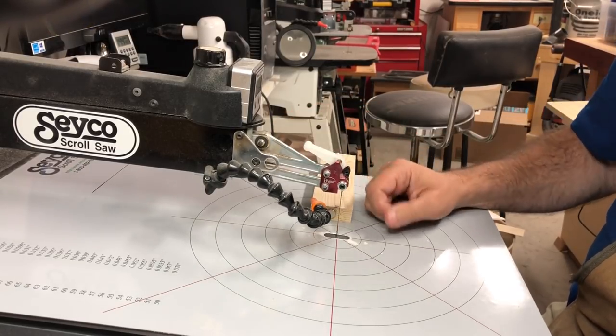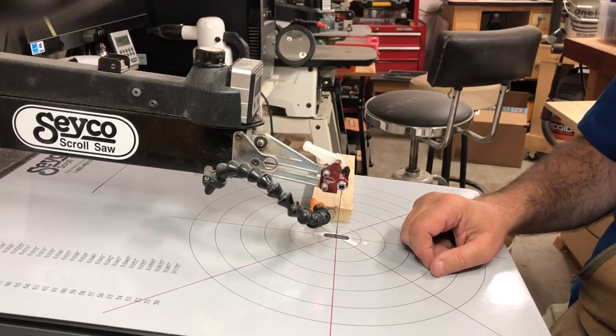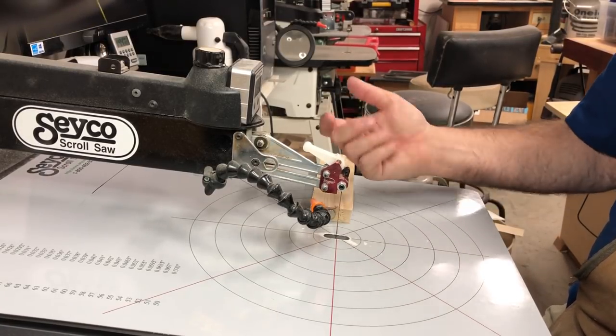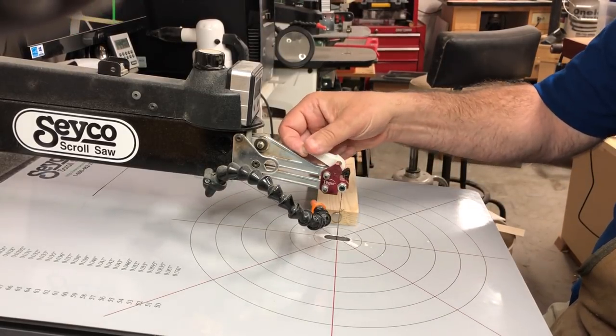Tighten the upper blade holder and apply tension, and we have a tensioned blade ready to saw. Again, if you want to take the blade out without dropping it when the blade wears out, you may not want to drop it on the floor.